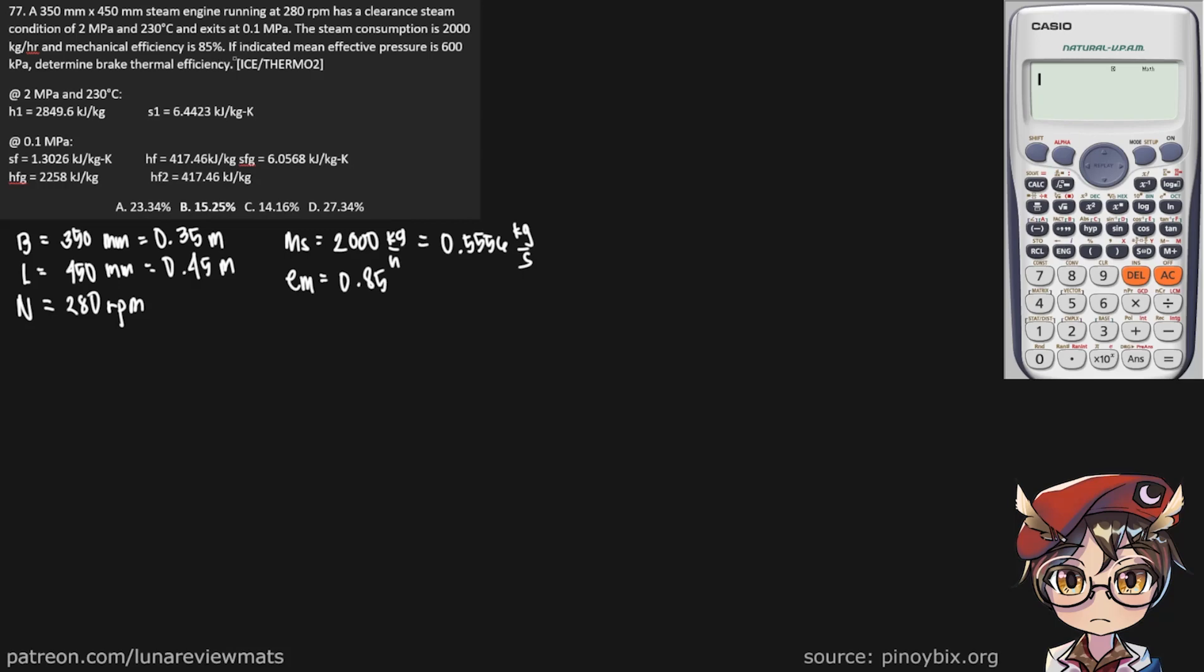And if indicated mean effective pressure is 600 kPa, determine the brake thermal efficiency, also known as the overall efficiency. First, let's write our indicated mean effective pressure, and we're trying to find brake thermal efficiency in percent.